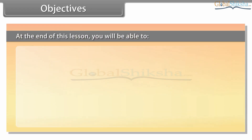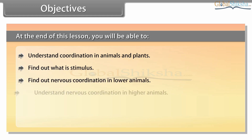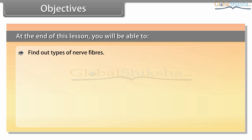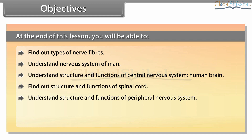At the end of this lesson, you will be able to understand coordination in animals and plants, find out what a stimulus is, find out nervous coordination in lower animals, understand nervous coordination in higher animals, find out the unit of the nervous system, find out types of neurons, find out types of nerve fibers, understand the nervous system of man, and understand the structure and functions of the central nervous system.